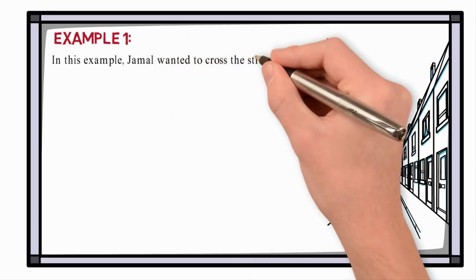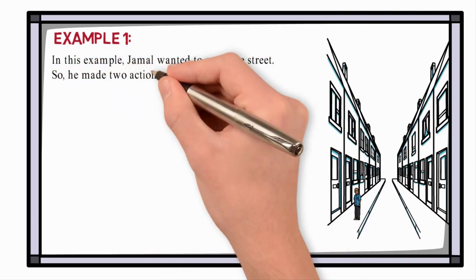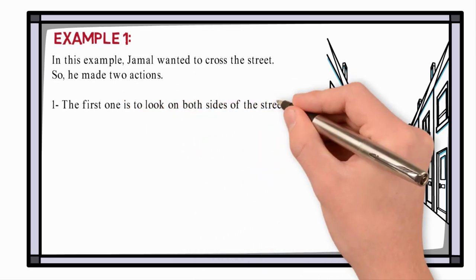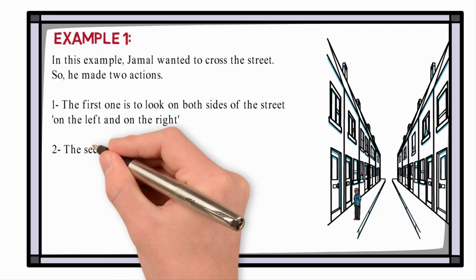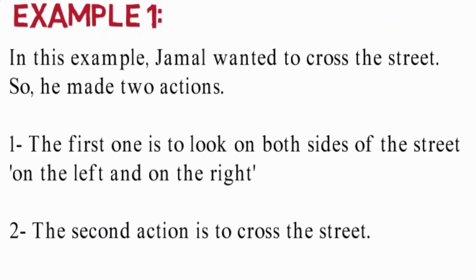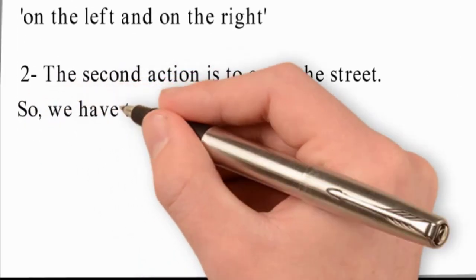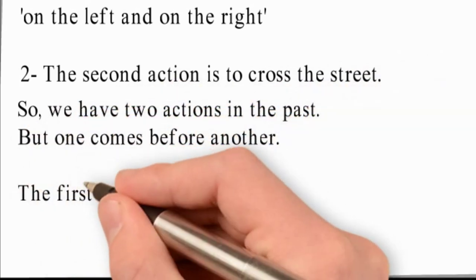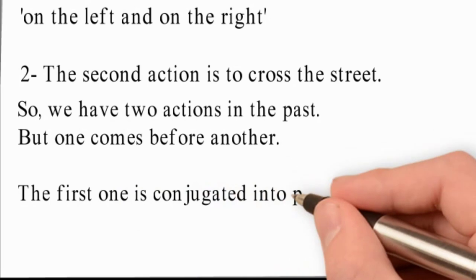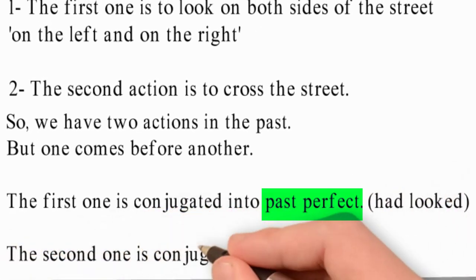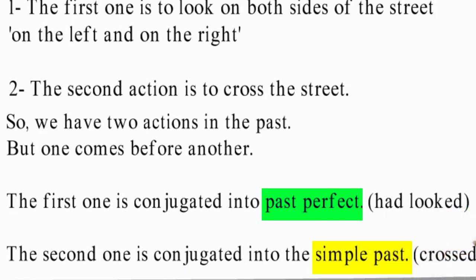In this example, Jamel wanted to cross the street, so he made two actions. The first one is to look on both sides of the street, on the left and on the right. The second action is to cross the street. So we have two actions in the past, but one comes before another. The first one is conjugated into the past perfect, the second one is conjugated into the simple past: crossed.